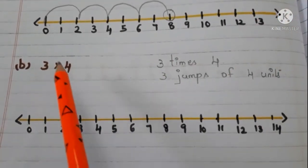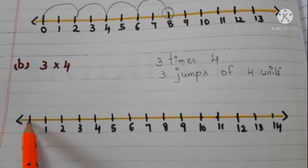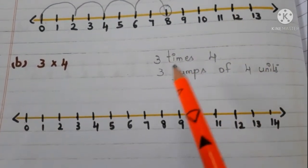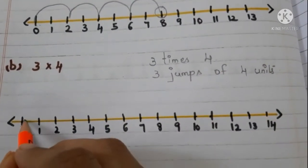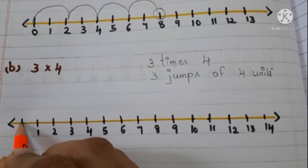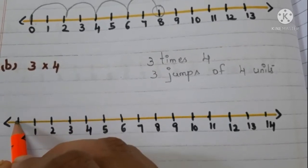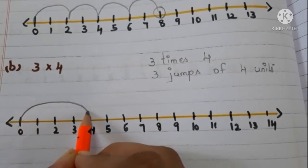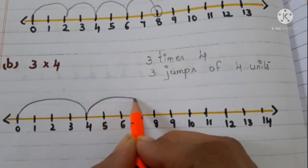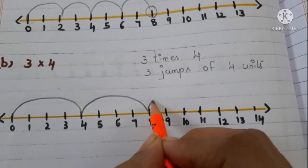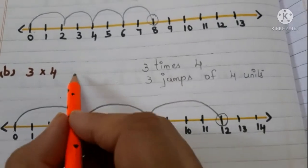Now let us go to the next one: 3 into 4 means 3 times 4, so we have to start at 0 and make 3 jumps of 4 units. First jump: 1, 2, 3, 4 — jump from here to here. Second jump of 4 units — jump from here to here. Third jump of 4 units — jump from here to here. So the answer is 12.